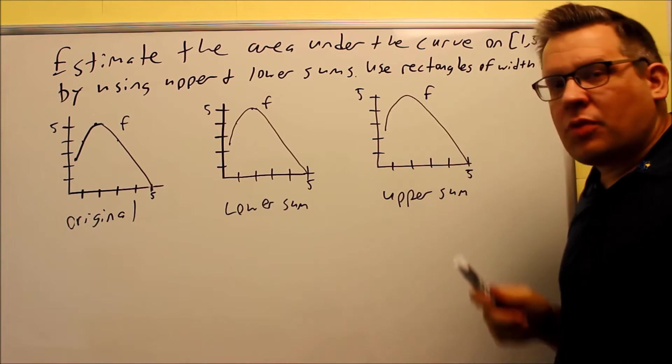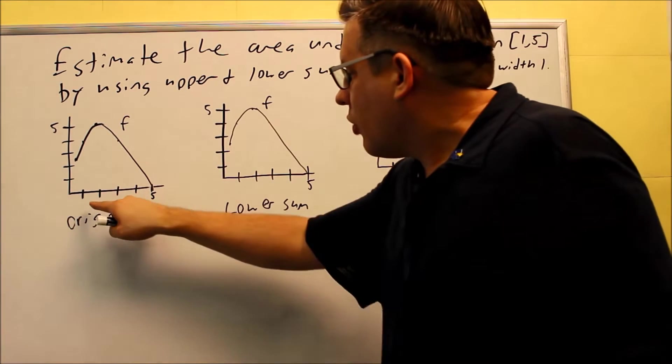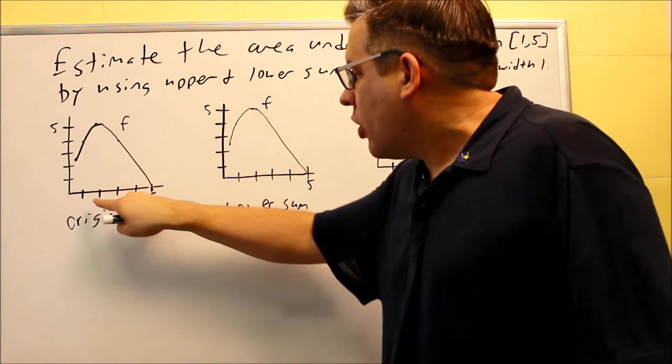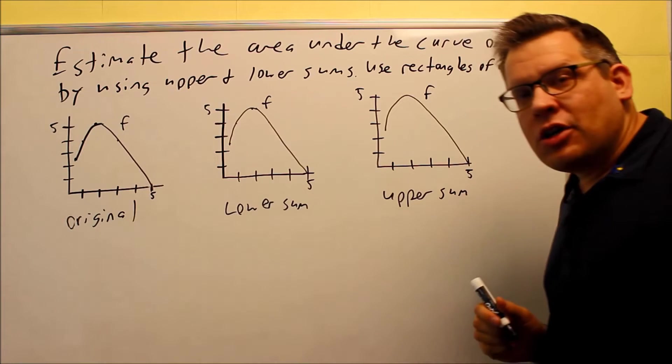Now, this is important because that's going to tell us how many rectangles we're actually going to be using. So, right here, if we have a width of 1, we have 1, 2, 3, 4, which means that we're going to use 4 rectangles for each one.